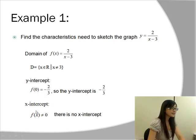For the x-intercept, we make f of x equal to zero. However, in this case, f of x cannot be equal to zero, because the numerator of f of x is 2. Therefore, there is no x-intercept.